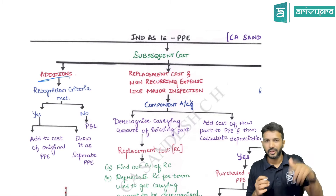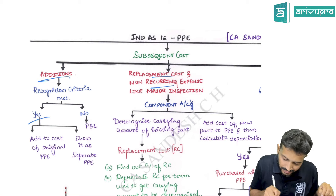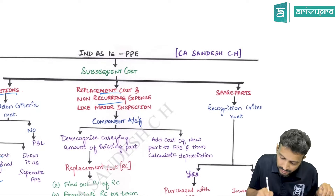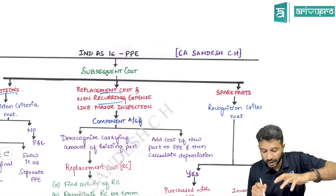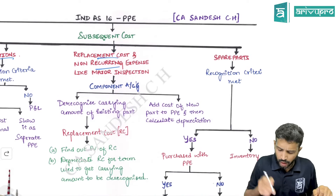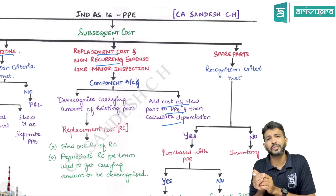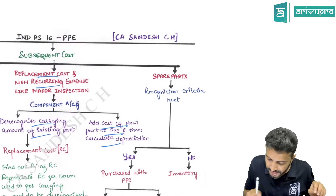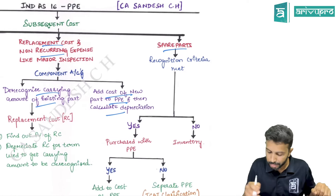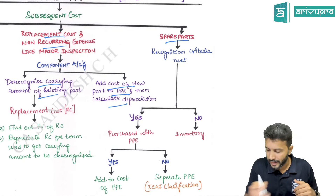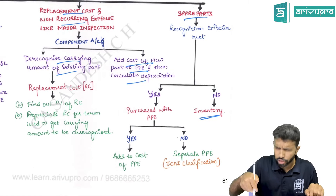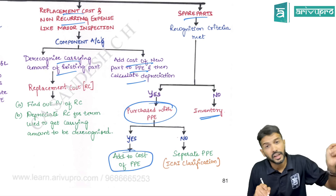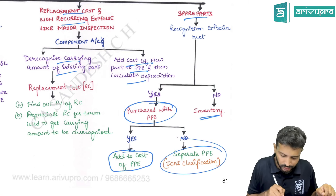For additions or replacement parts: if recognition criteria is met, add to PP cost; otherwise, transfer to P&L. For replaced parts or major inspection charges, add the new replacement cost and major inspection charges, but de-recognize the carrying amount of the existing part. For spare parts, if recognition criteria is met they can be added to PP cost; otherwise shown as inventory. Spare parts purchased along with PP are added to PP cost; spare parts purchased separately may be treated as a separate PP.